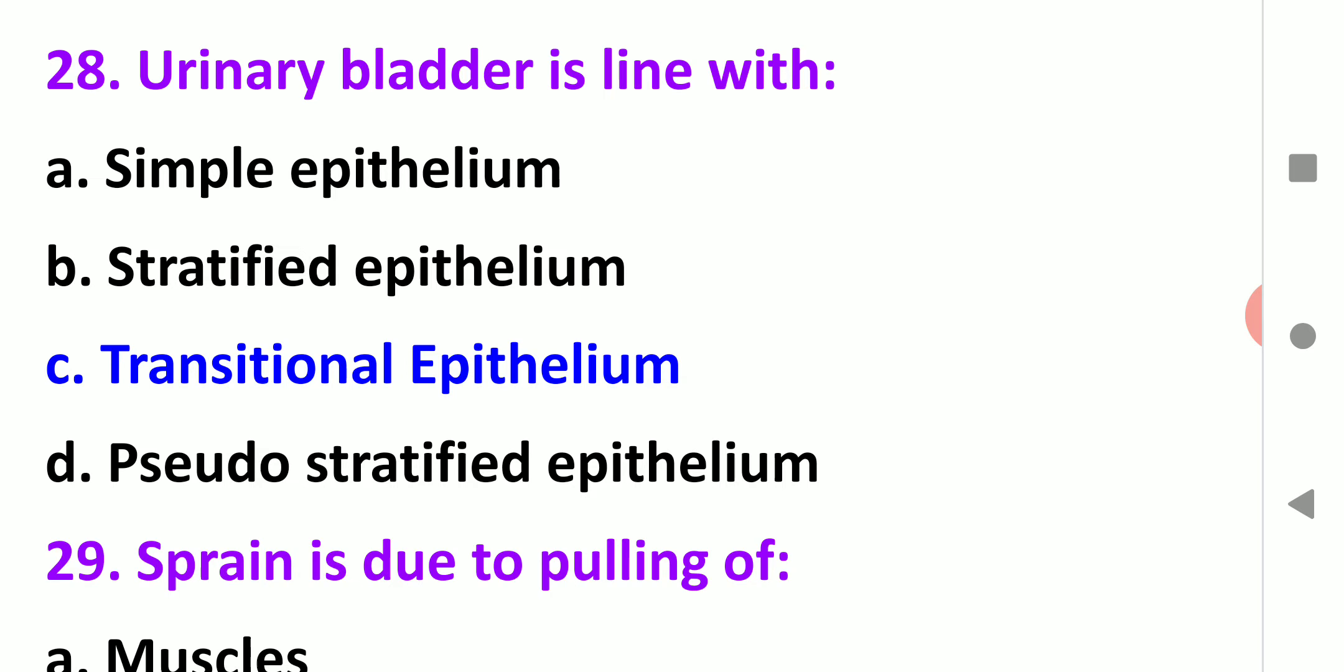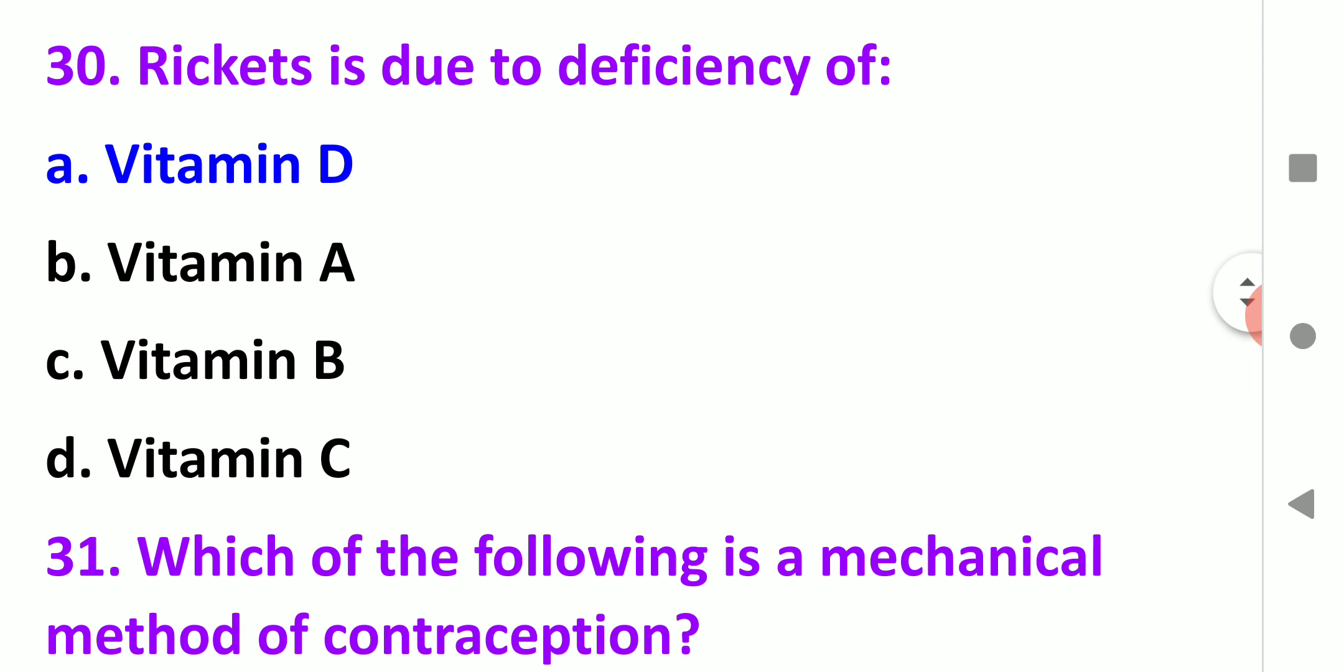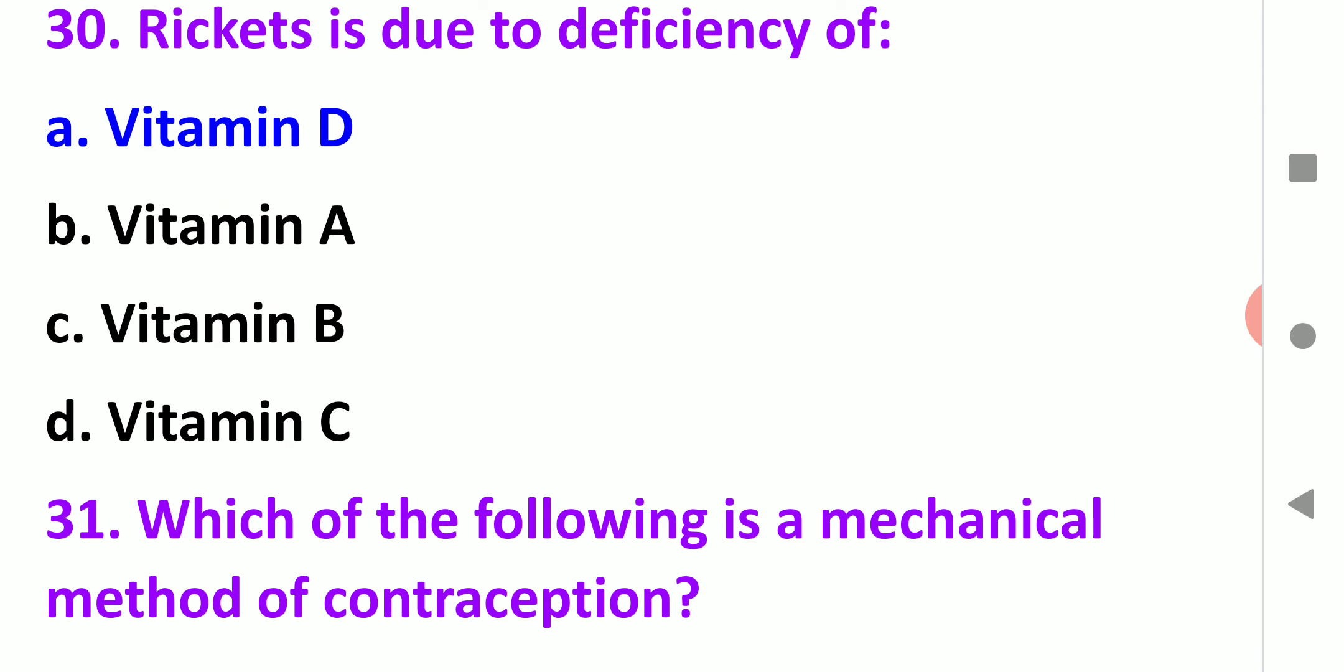Urinary bladder is lined with transitional epithelium. Because when you need more urine to accommodate, you can expand and accommodate more urine. Next, sprain is due to pulling of ligaments. Rickets is due to deficiency of vitamin D.